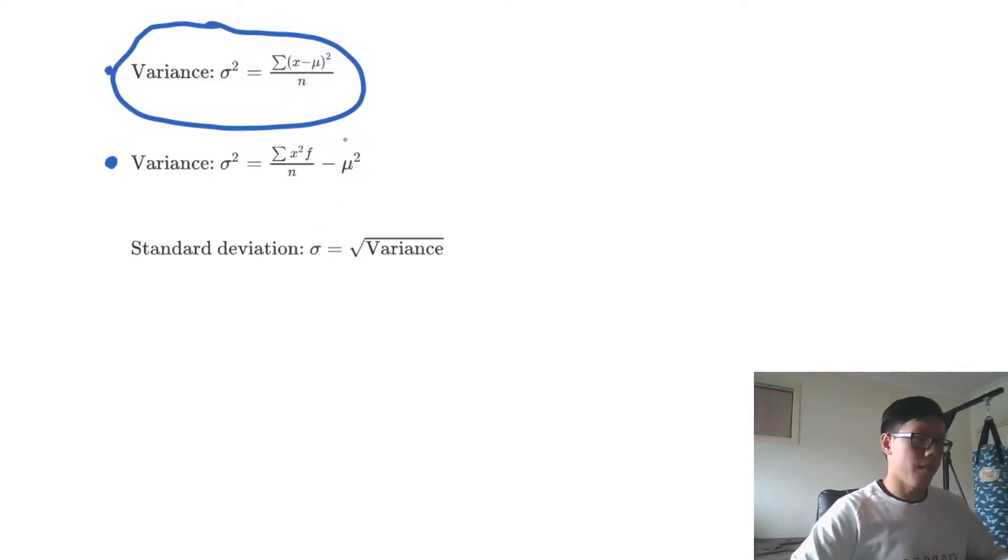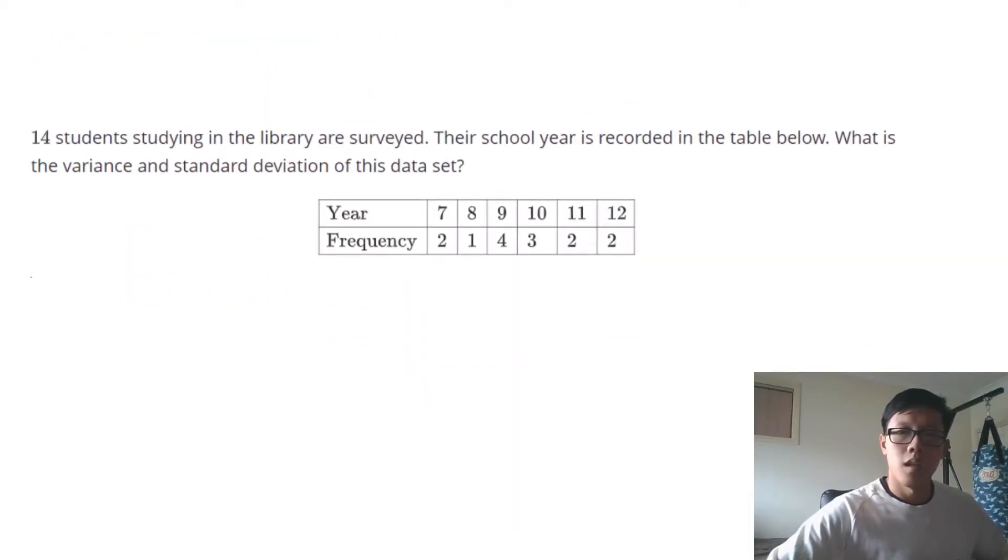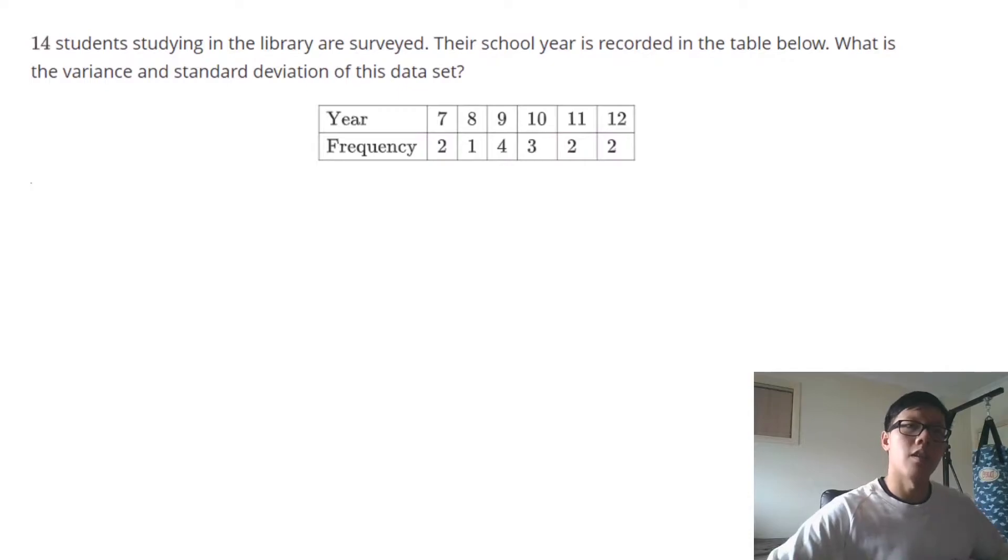And the standard deviation is still the same, it's just the square root of the variance. So we're going to do a question. The question says there are 14 students studying in the library and they're surveyed and we record what year they are in the table.